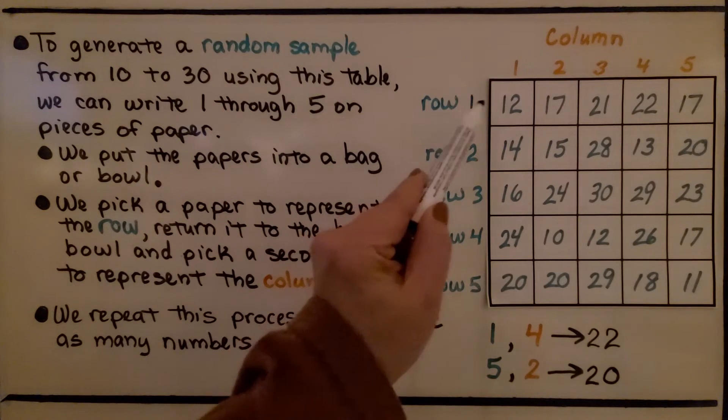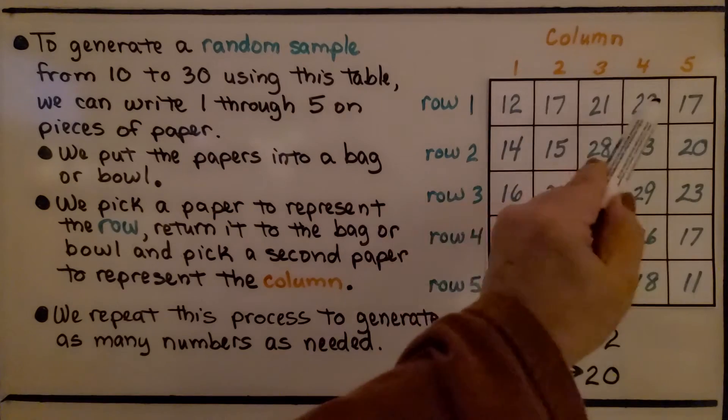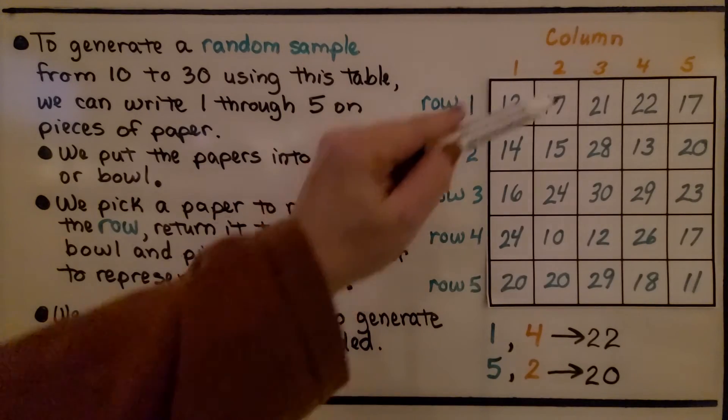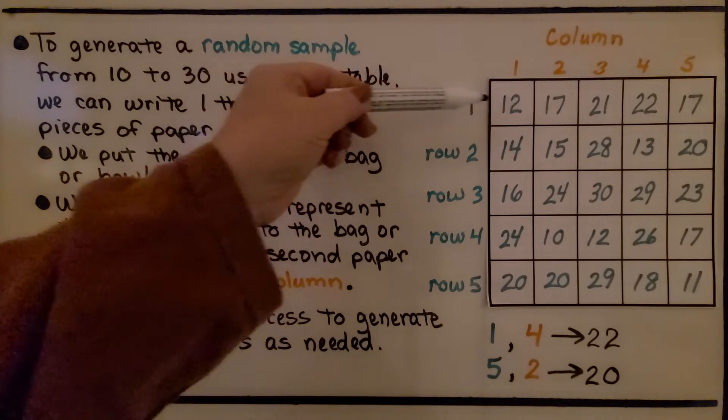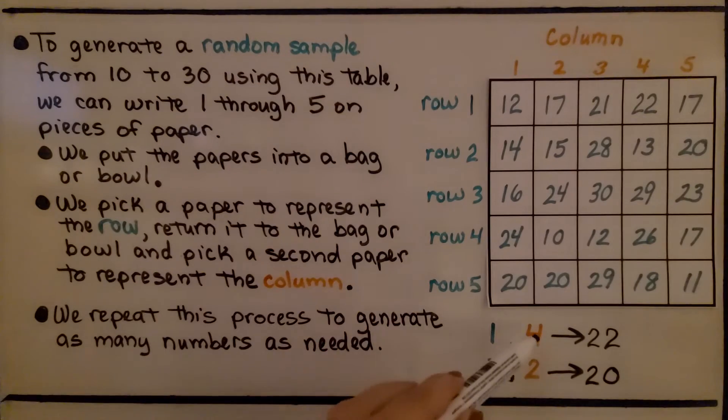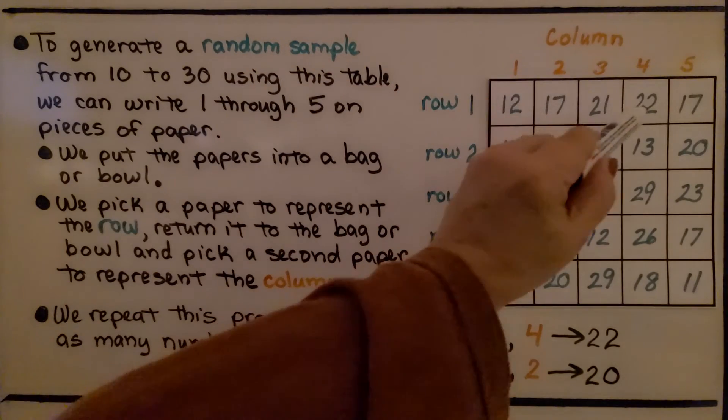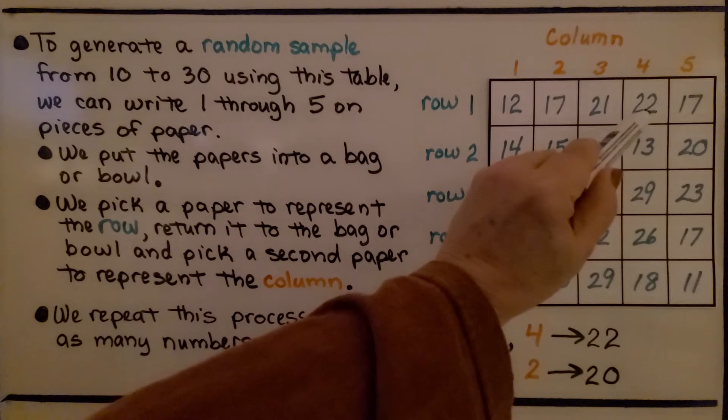The first pick would tell us the row that the number would be in. The second paper we pick would tell us the column. So if we picked one as our first number, we know we're going to be in row one, and if the second number we picked was a four, we would know our random number is 22.